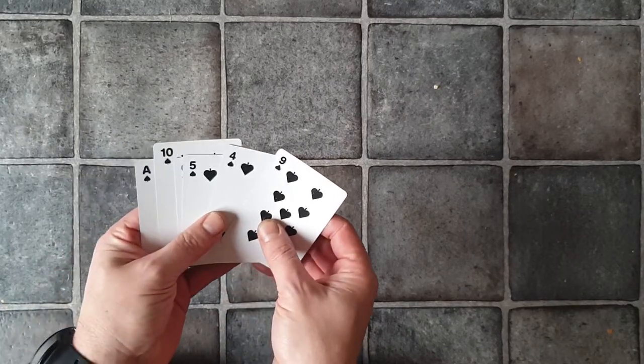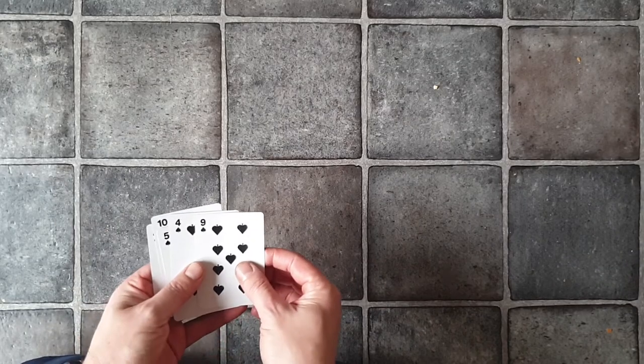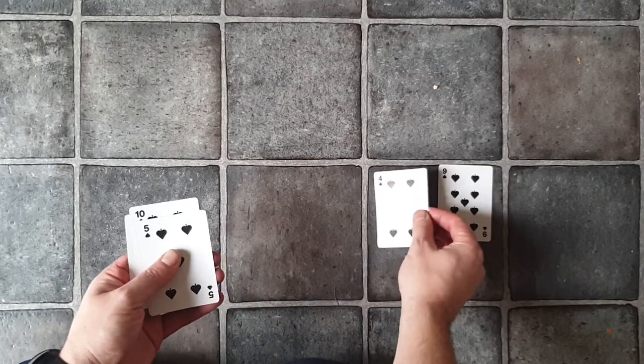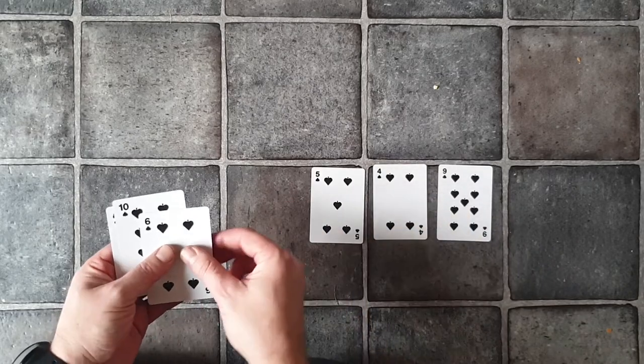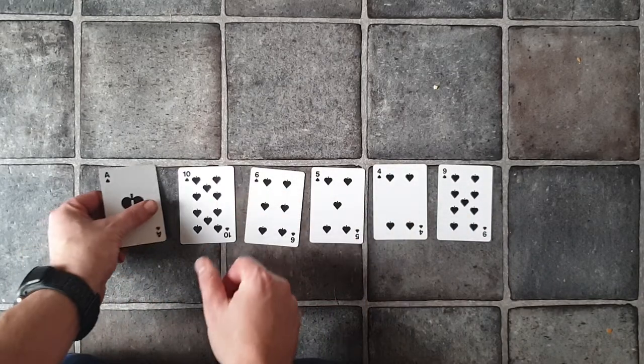All shuffled so there is no order to our cards. Let's have a look. Yes, that's a nice shuffle there. So I'm going to start off by putting my 9 down, my 4 down, my 5 down, my 6, my 10, and my 8.